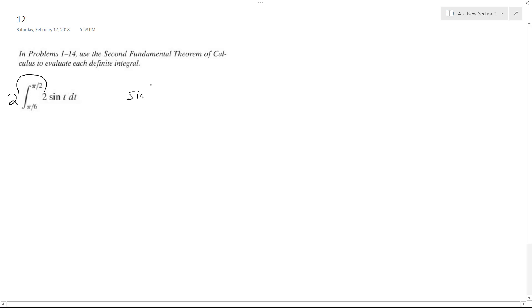So sine of t dt, the integral of this, is equal to negative cosine of t. And we're going to take this from pi over 6 to pi over 2, or pi over 2 to pi over 6.